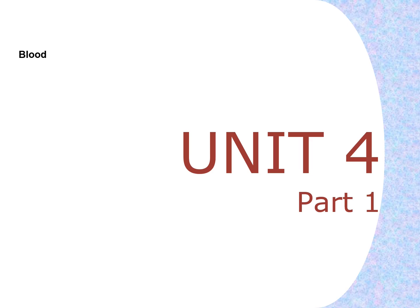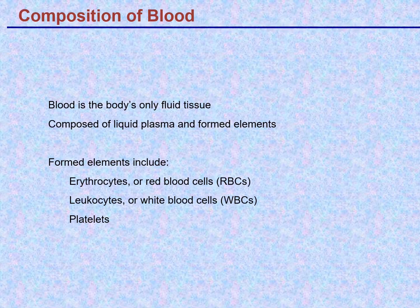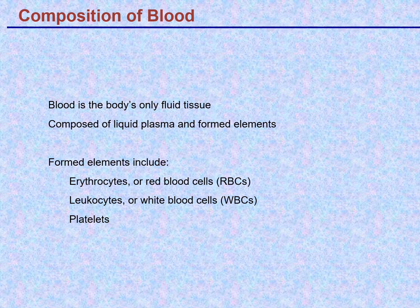This is Unit 4 Part 1. Unit 4 is on blood, and we're going to discuss some of the characteristics of the blood, its different components, and its function. Blood is the body's only fluid tissue — its only liquid organ. It's made up of fluid liquid plasma and what are called formed elements. Plasma is the fluid part. If the blood is clotted and the clotting factors have been removed, the resulting liquid is called serum. Serum and plasma are the same, but serum doesn't have the clotting factor proteins in it.